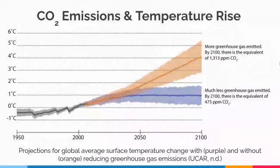Global warming is primarily driven by human activities releasing greenhouse gases. Current models predict the average global temperature rise an additional four degrees Celsius, shown here in orange. And in the best-case scenario, if we make an effort to greatly reduce CO2 emissions, it will still rise at least one degree Celsius during the 21st century, shown here in purple.